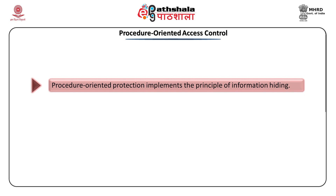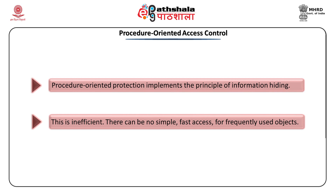If you have this degree of protection, it has a penalty of inefficiency. In procedure-oriented protection, there is no simple fast access even if the object is frequently used. A mechanism that provides greater flexibility has a price of increased overhead. Implementing capabilities that must be checked for each access is far more difficult than implementing a simple directory structure that is checked only on a subject's first access. The implementation complexity becomes apparent in slow response to the user. So if any mechanism is designed, there should be a balance between simplicity and functionality.